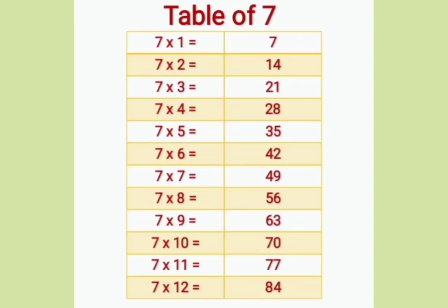Seven ones are seven, seven twos are fourteen, seven threes are twenty-one, seven fours are twenty-eight, seven fives are thirty-five, seven sixes are forty-two, seven sevens are forty-nine, seven eights are fifty-six, seven nines are sixty-three, seven tens are seventy, seven elevens are seventy-seven, seven twelves are eighty-four.